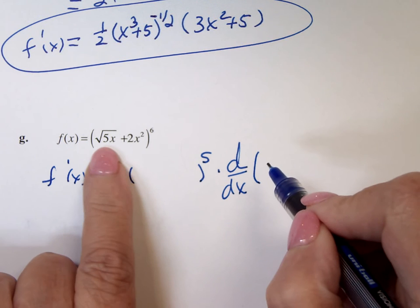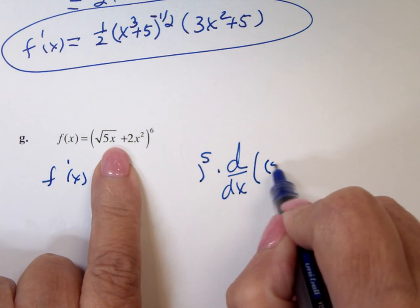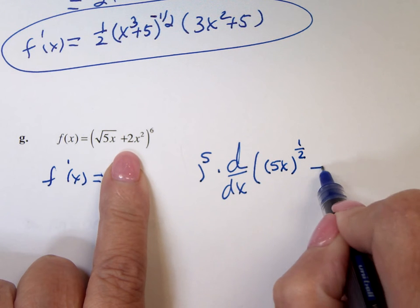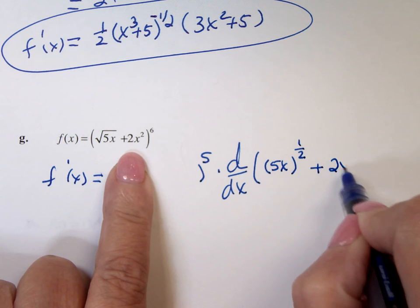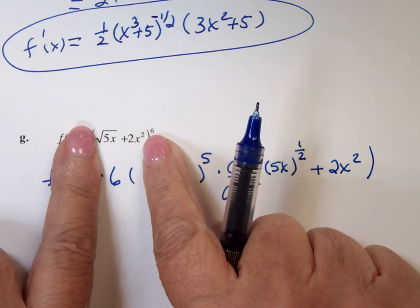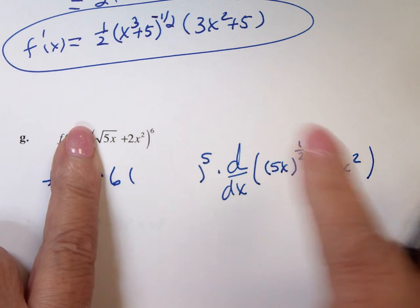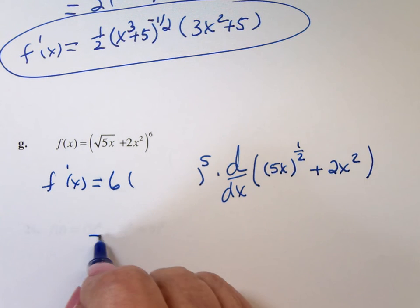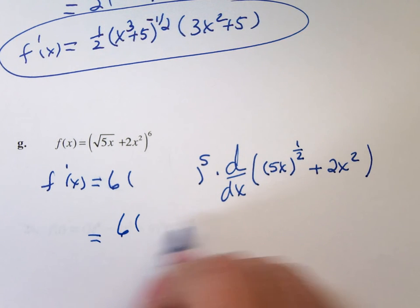Now, I have the square root of 5X, that's 5X to the one-half power plus 2X squared. That's the blob, 5X to the one-half power, because that 5X is under the radical, and 2X squared.